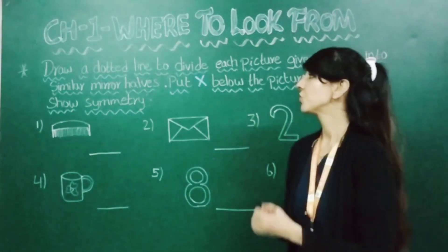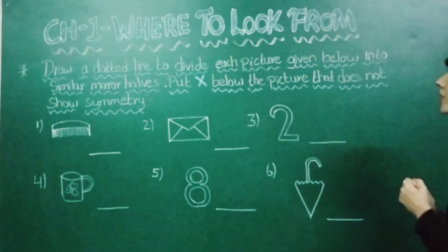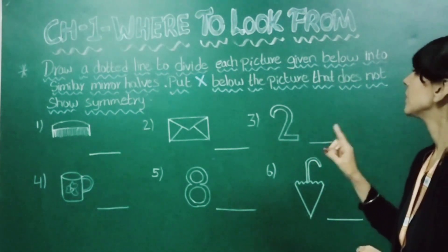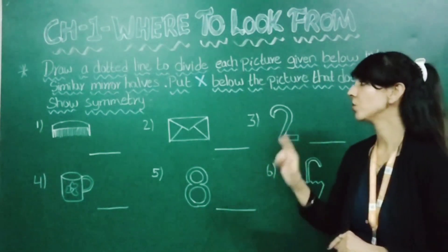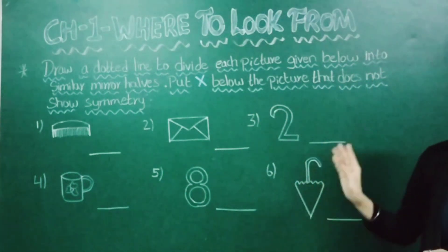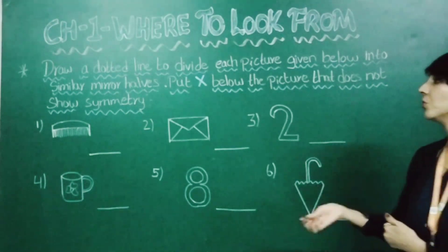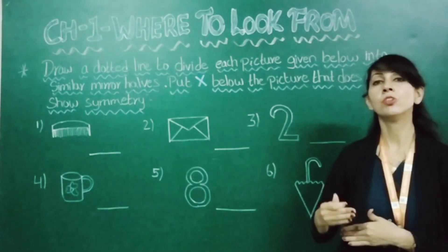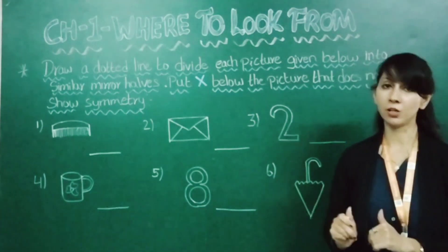Now moving to the exercise: draw a dotted line to divide each picture given below into similar mirror halves, and put a cross below the picture that does not show symmetry. We have to first make the dotted line, then recognise whether the picture shows symmetry or not.